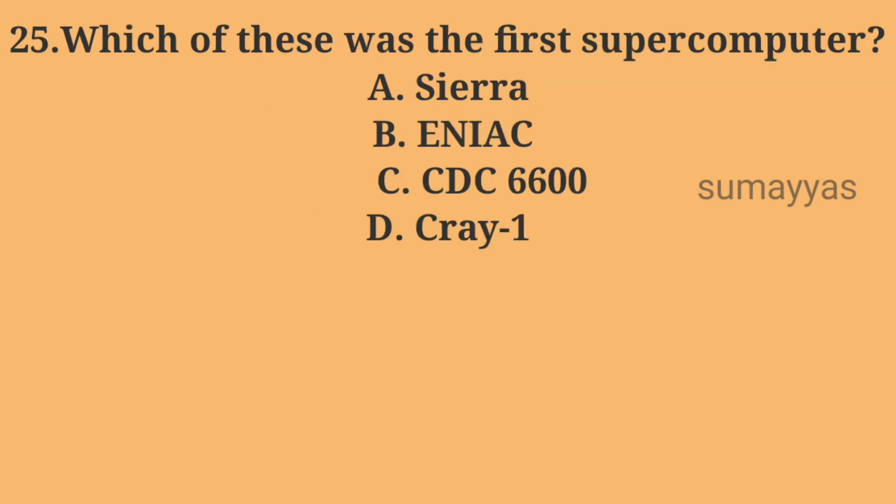Which of these was the first supercomputer? Option A: Sierra. Option B: ENIAC. Option C: CDC 6600. Option D: Cray-1. The correct answer is CDC 6600.